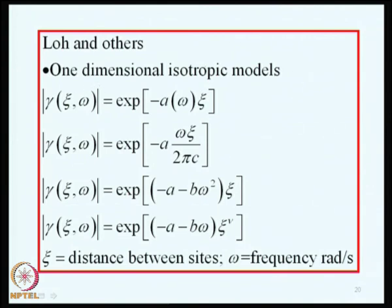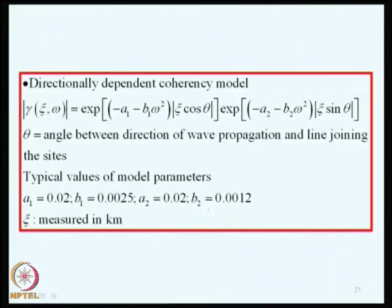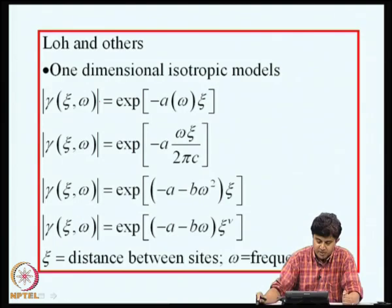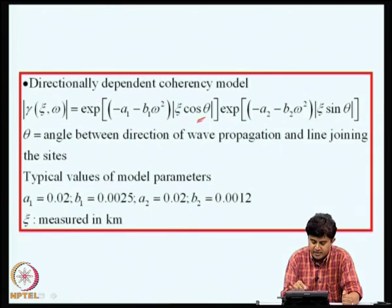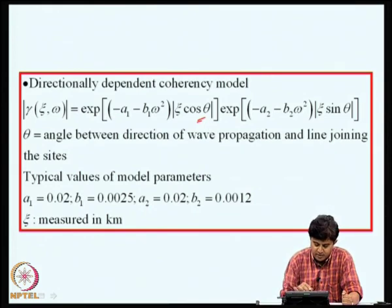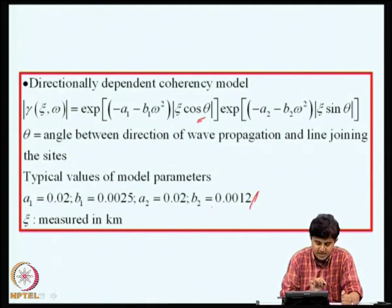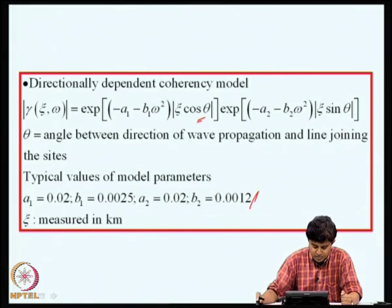One class of models is one-dimensional isotropic models, where the amplitude of the coherency function is given as exp(-a(omega) * xi), where xi is the distance between the sites. There are various forms of this exponent suggested in the literature. Subsequently, a directionality effect is introduced by considering the angle theta between the direction of wave propagation and the line joining the sites. Typical values for model parameters a1, b1, a2, b2, etc., are obtained from instrumentally recorded data.